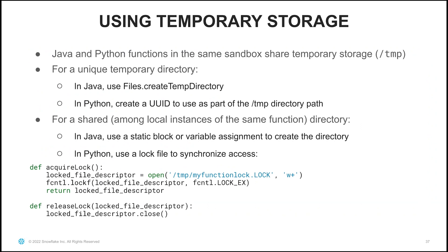The sandbox prevents local file system access, but does allow access to temporary storage. If you need working files in your UDF, you can write them to the temp directory. For Java UDFs, use Files.createTempDirectory for a unique temporary directory. In Python, you can similarly create a temp directory or use a UUID as part of the path. If you want a shared directory among local instances of the same function, use a static block or variable in Java. In Python, you can use a lock file pattern — defining an acquireLock method that opens a lock file, performs initialization, and then releases it so other instances can proceed.